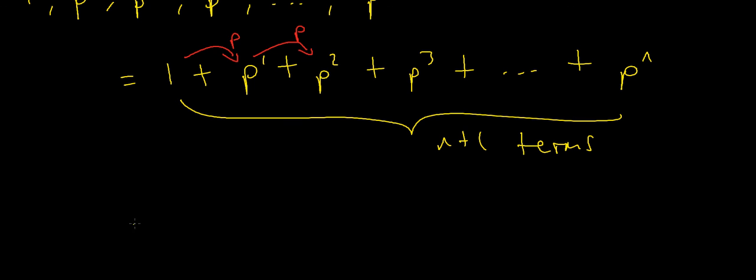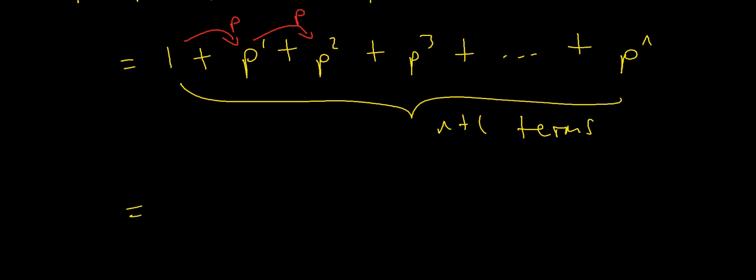The formula for the sum of a finite geometric series says the sum equals the first term times 1 minus r to the power of however many terms there are, divided by 1 minus r. This gives me 1 minus p to the power n plus 1, because there are n plus 1 terms in total.